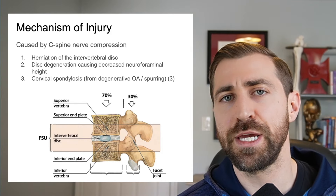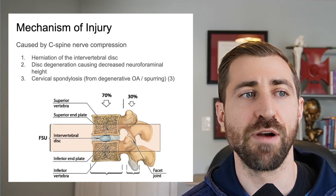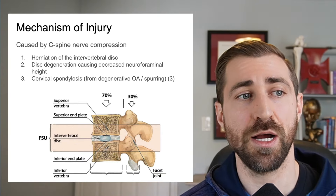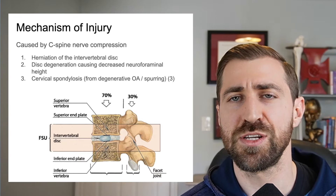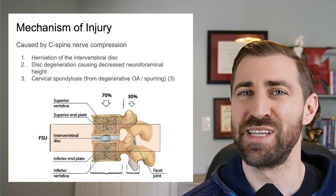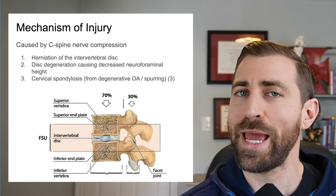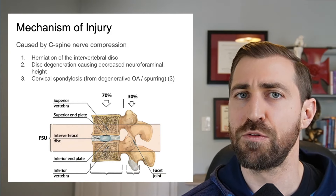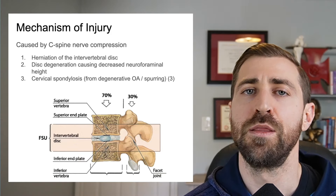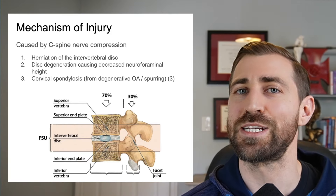The mechanism of injury for cervical radiculopathy is either a herniation of the intervertebral disc — generally a posterior lateral herniation — disc degeneration causing decreased neuroforaminal height, or cervical spondylosis, which is essentially osteoarthritis around the intervertebral foramen. Importantly, you can have a lot of these degenerative changes with no symptoms whatsoever. One reason is that there's a decent amount of space in the intervertebral foramen, so as things degenerate, the nerve may still have plenty of room and not necessarily develop symptoms.